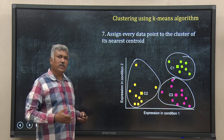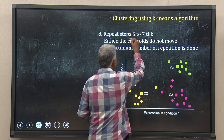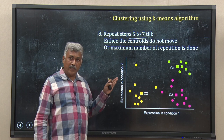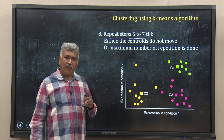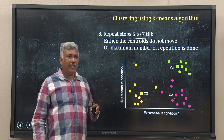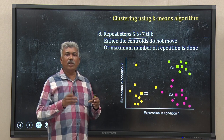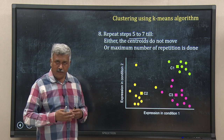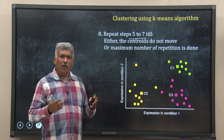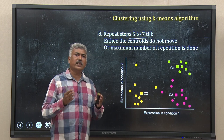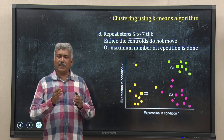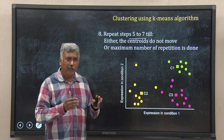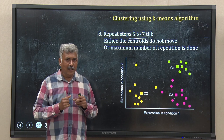Now I can repeat this whole process — that is, repeat steps 5 to 7. Again calculate the centroid of each new cluster, calculate the distance of each data point from those real centroids, and then assign each data point to a particular cluster. You keep repeating these three steps. Your stopping criterion would be: once the centroids are not moving — every time you reassign the clusters and calculate the new centroid, the position of the centroid is not changing — that means the clusters are not changing and you have reached the end.